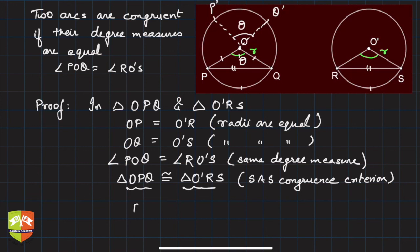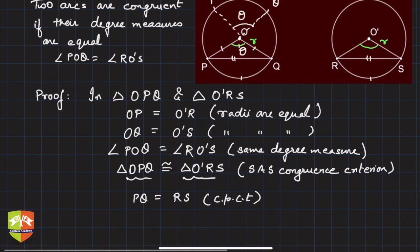Therefore we can say PQ is equal to RS. You will write this multiple times: CPCTC, which is Corresponding Parts of Congruent Triangles. This is what we needed to establish. We have to establish that PQ equals RS, hence proved.